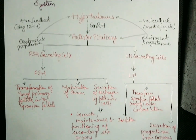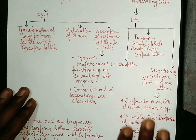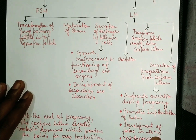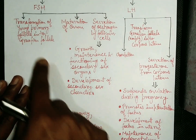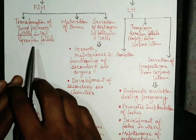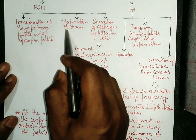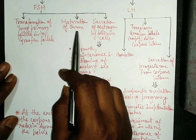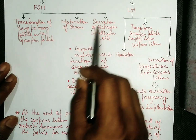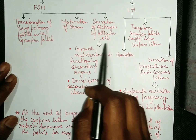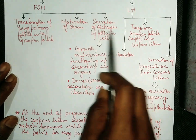Let's see the role of FSH and LH in the female reproductive system. FSH converts a young primary follicle into a Graafian follicle; it is also required for ovum maturation. FSH is also responsible for the secretion of estrogen by follicular cells.